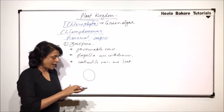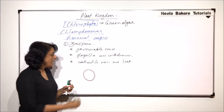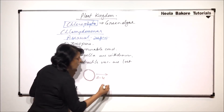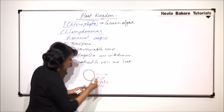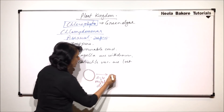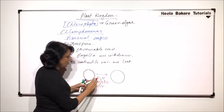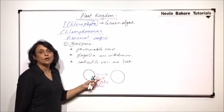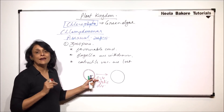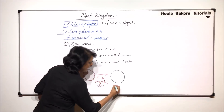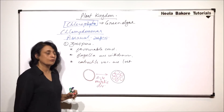The protoplast, that means all the content which is inside this plasma membrane, undergoes two to four mitotic divisions. This results in formation of many structures depending upon the number of divisions. One division produces two spores, two divisions produce four, three divisions produce eight, and four divisions produce sixteen. So inside this, there would be many such spores which would be produced.